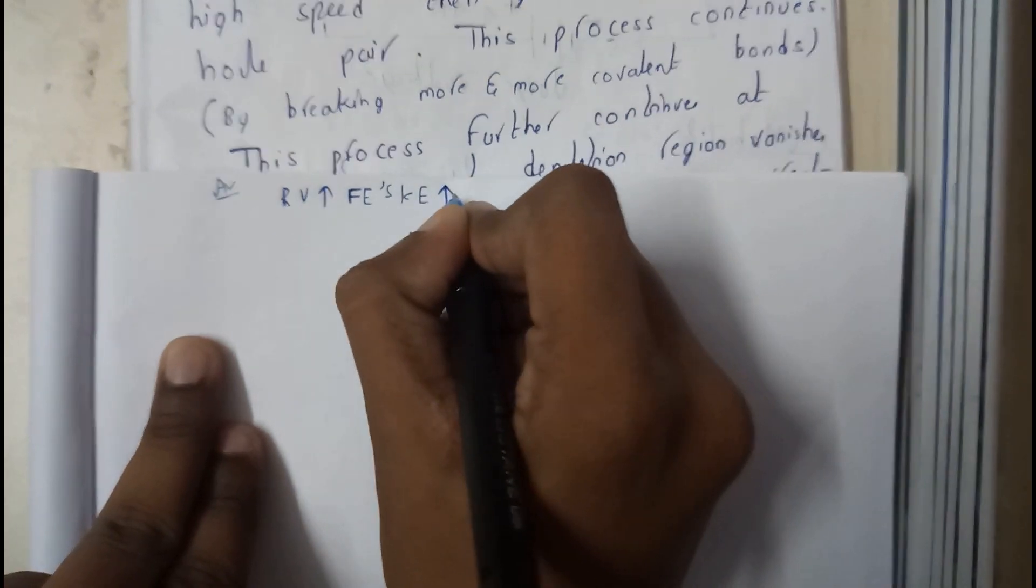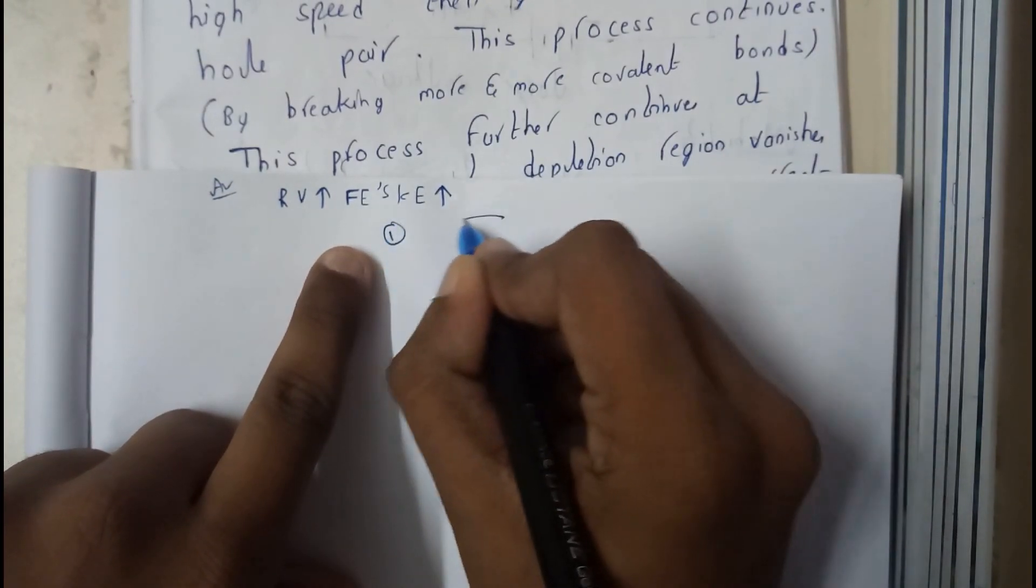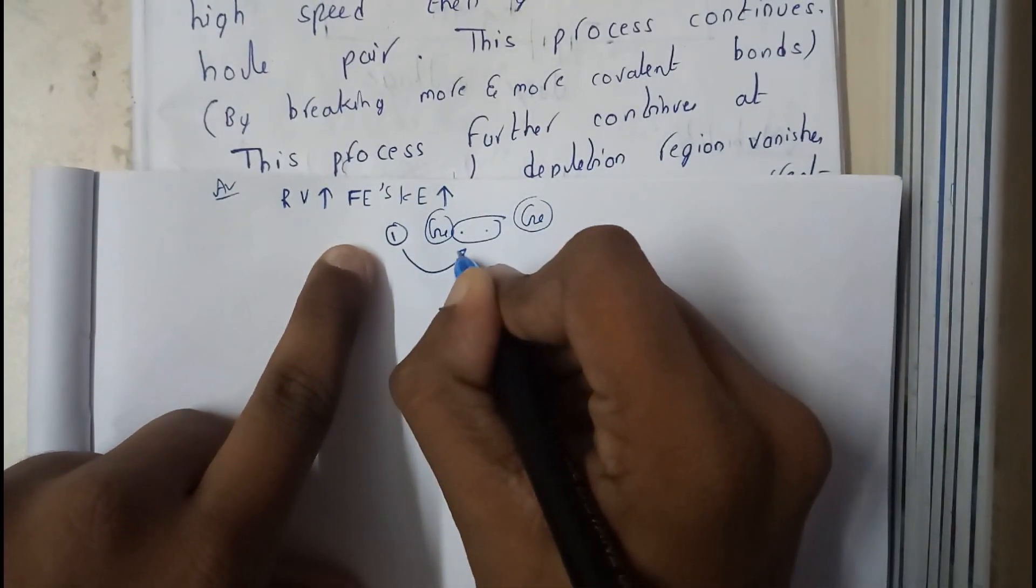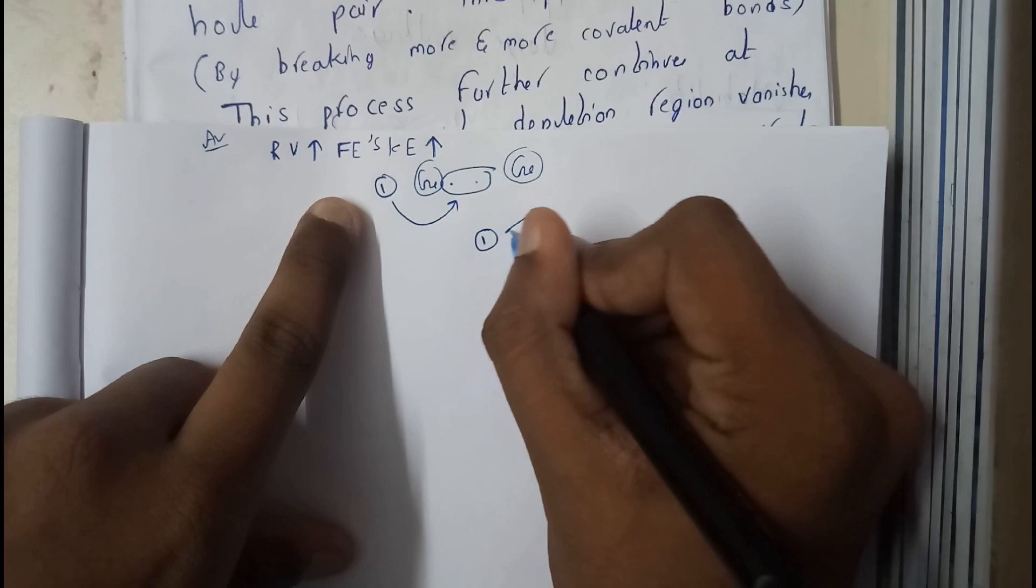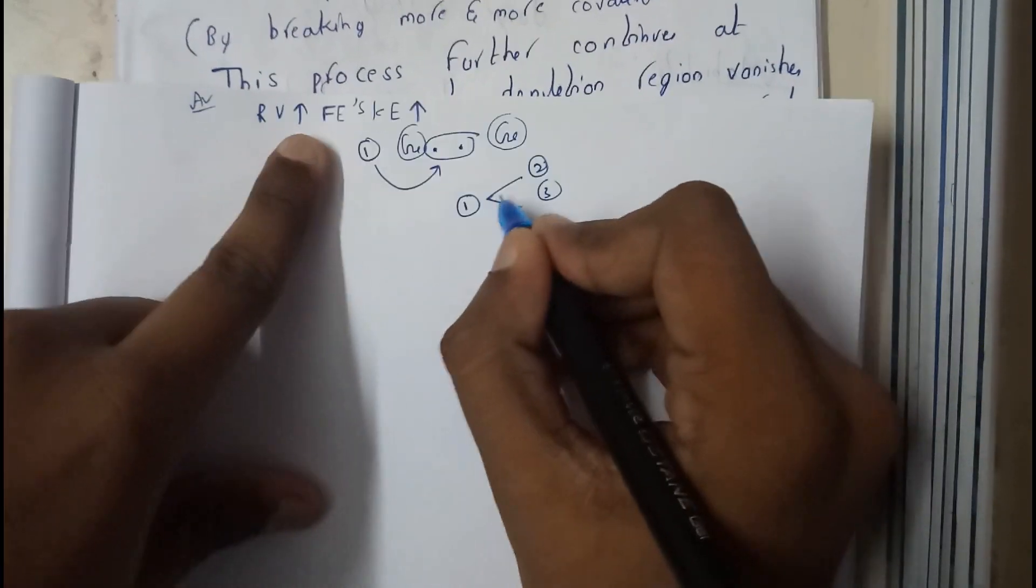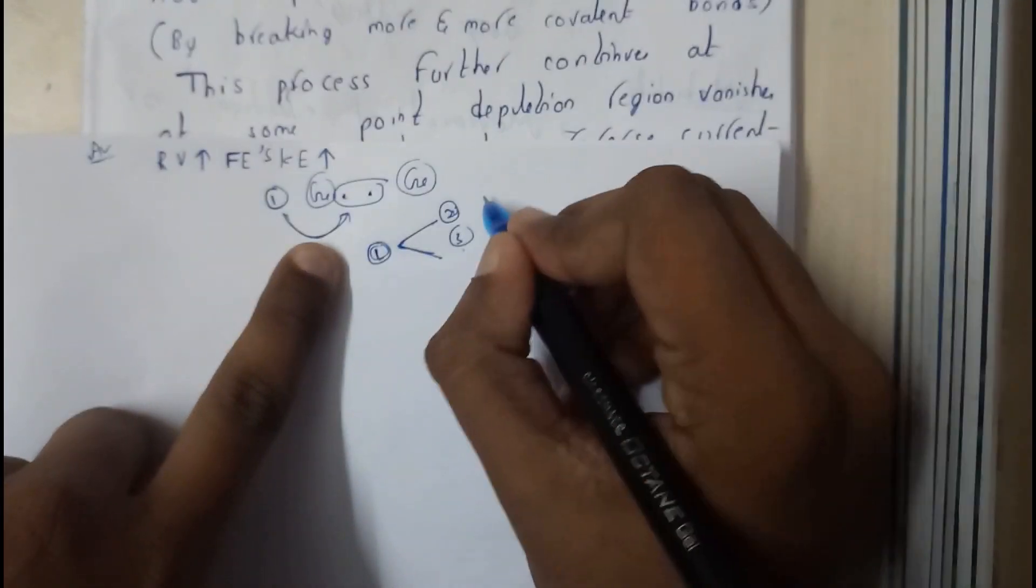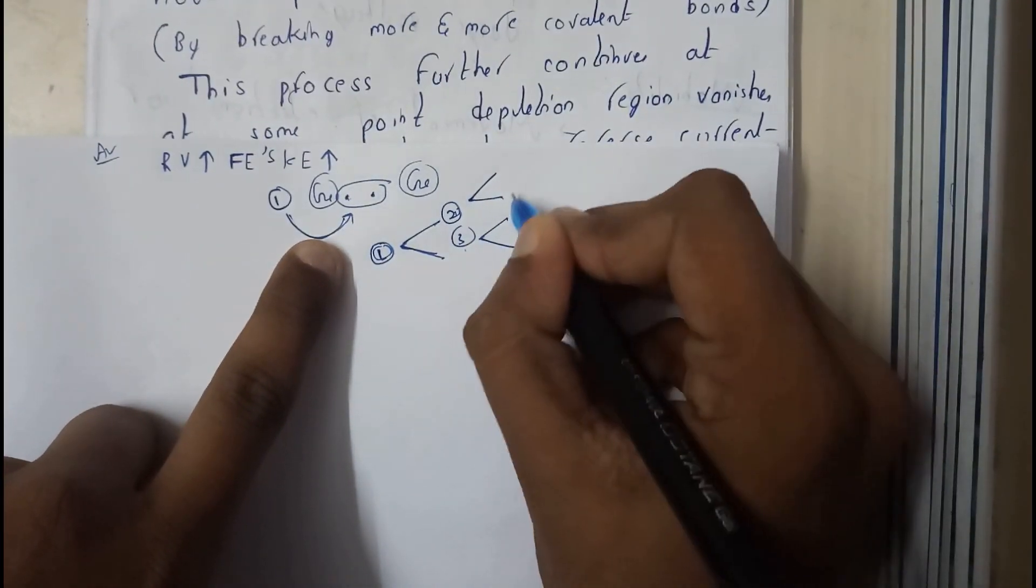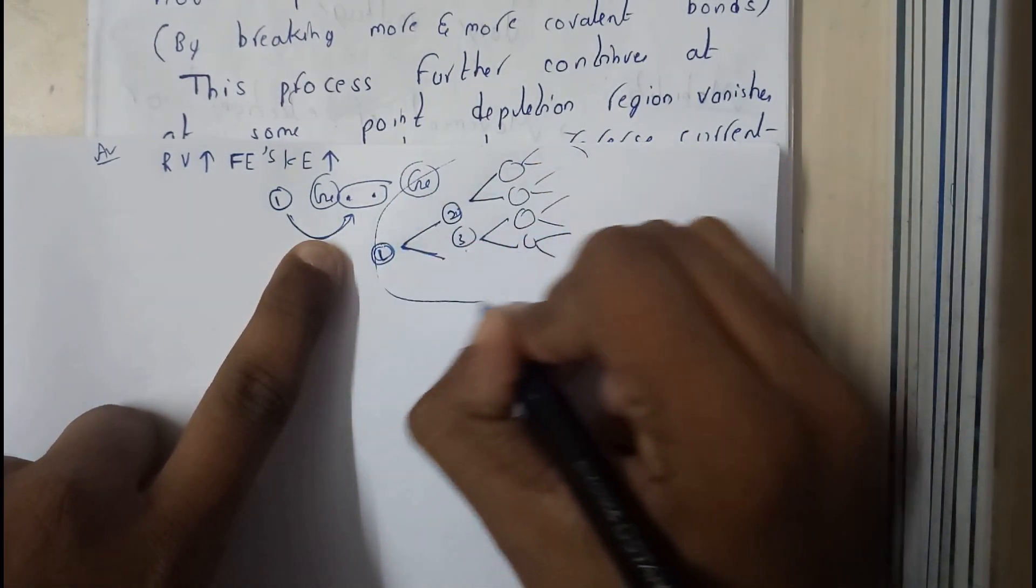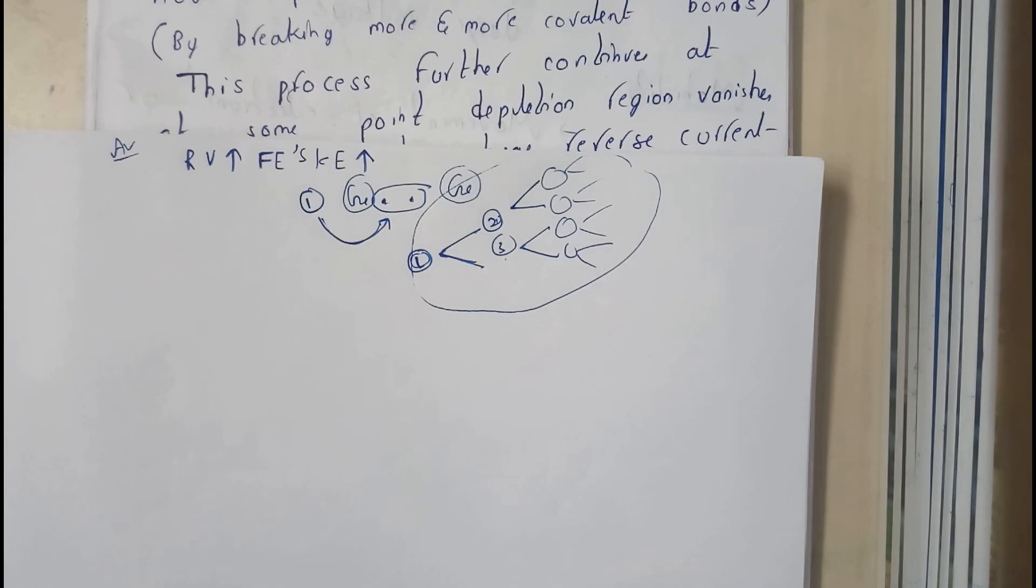Now this one free electron will go and hit a covalent bond between two elements. Let us assume this is the second electron, third electron. This first electron is hitting and giving two. Similarly, these two hit one more covalent bond and give two. Like that, this chain continues really far. That's the reason why we call this carrier multiplier. Now I hope everyone got a hundred percent clear idea and difference between avalanche and Zener.